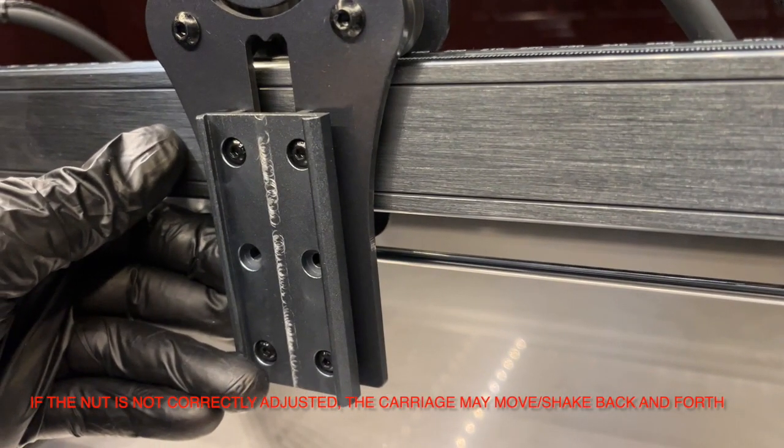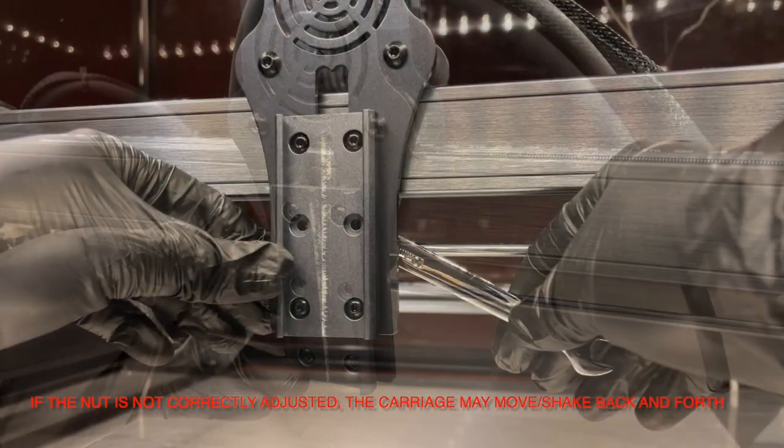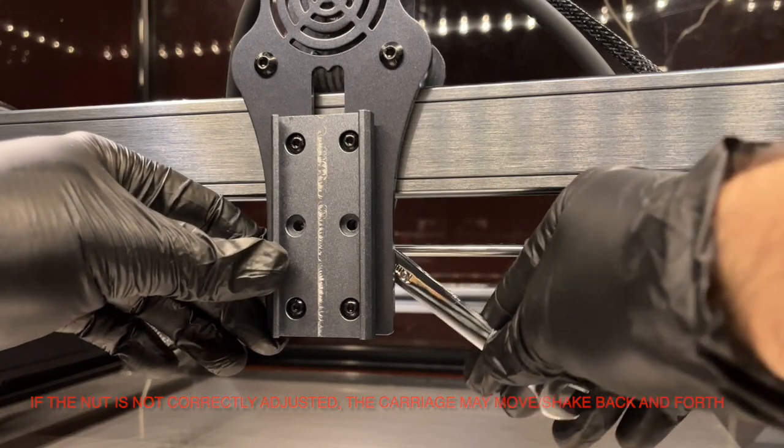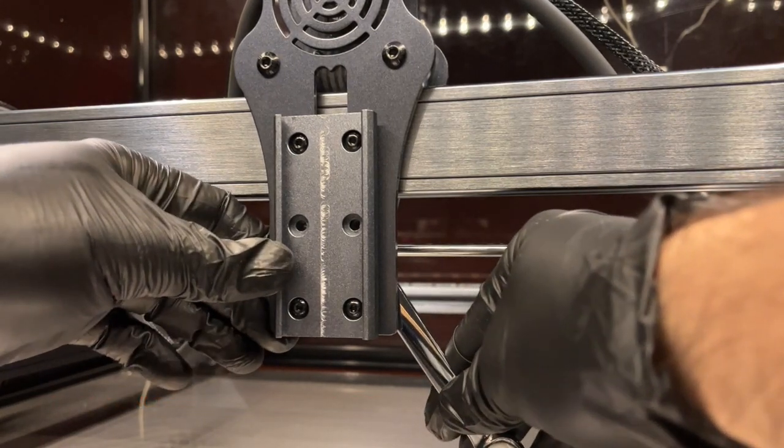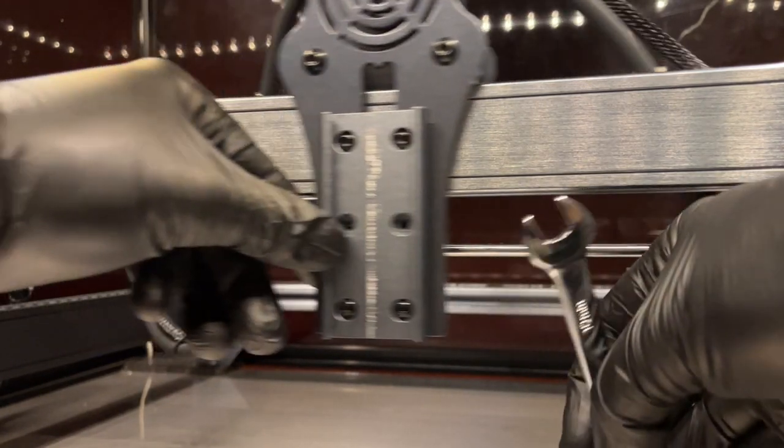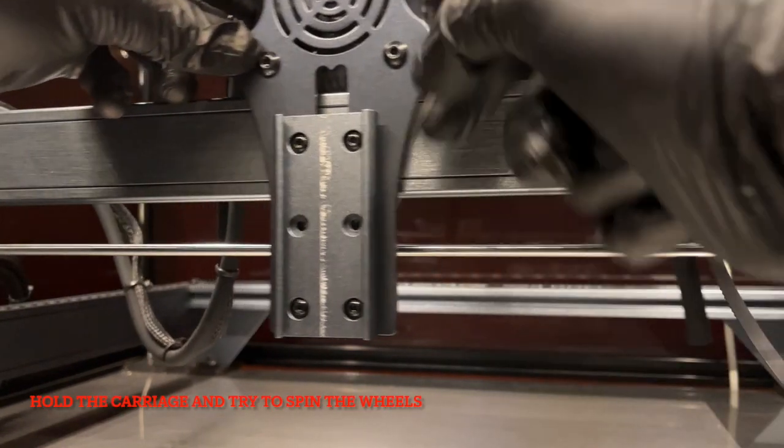If it seems okay, try holding the carriage and spin the wheels with your thumb. The wheel should not spin freely but should not be so tight that you cannot move it with the pressure of your thumb.